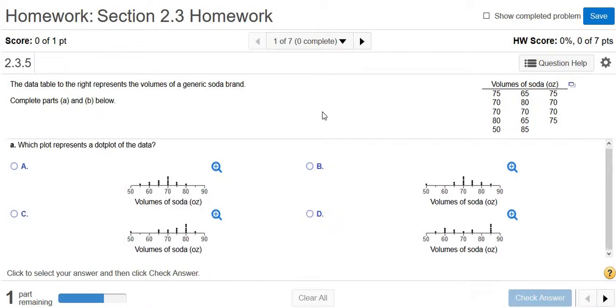We can do the dot plot by hand or we can use the software. Let me show you how to use the software, it's actually really simple. You see this little box right here? If you left click on this little box and click open in StatCrunch, it'll open all the data for you in StatCrunch. It's super nice.